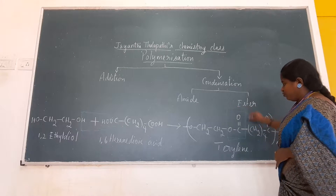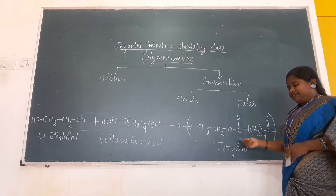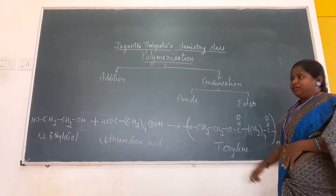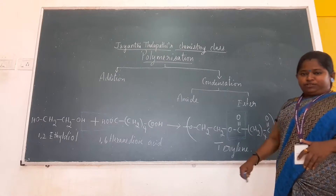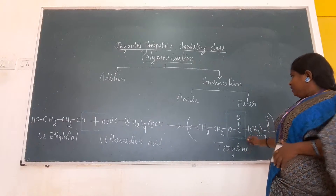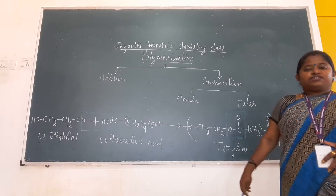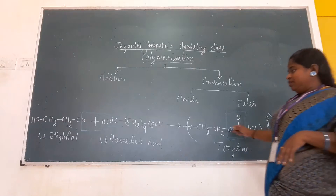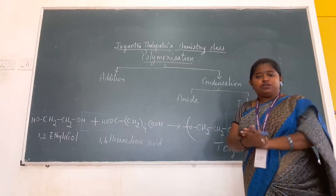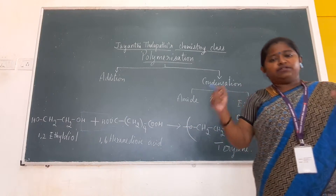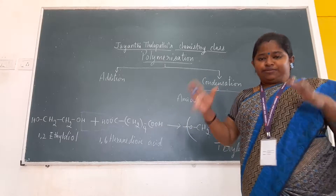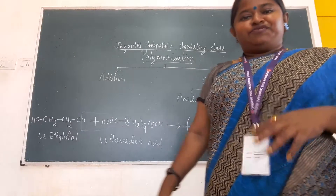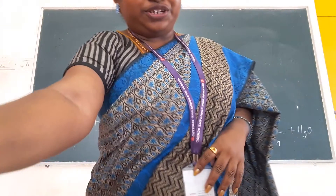This is called Terylene — a polymer which gives an ester linkage. For the condensation reaction, the catalyst is H₂SO₄, sulfuric acid, and this reaction takes place under high temperature. Thank you children for watching this video. Bye bye.